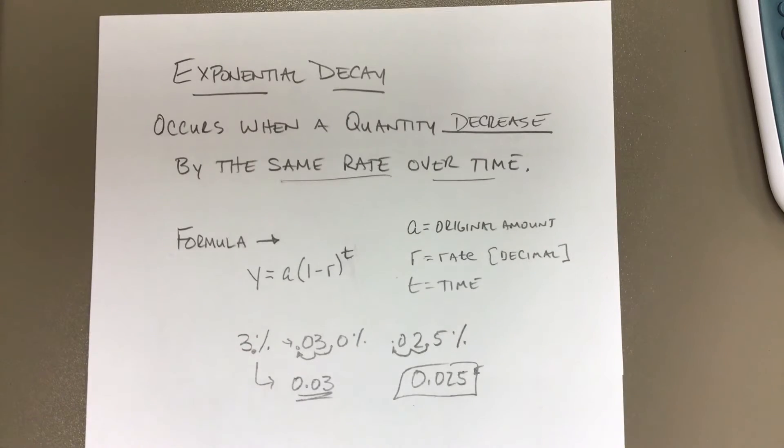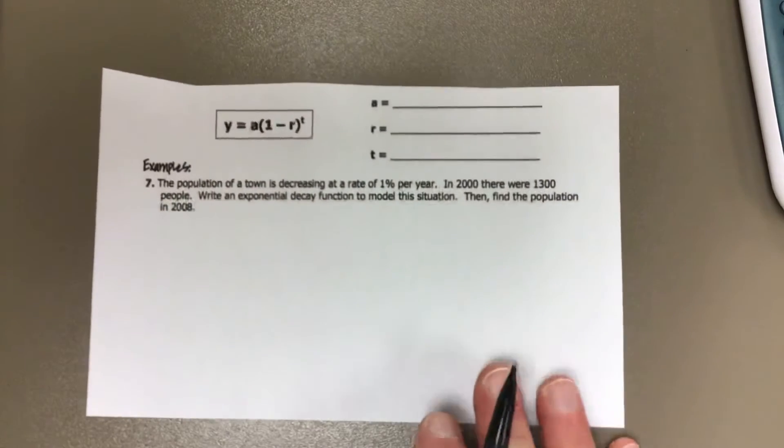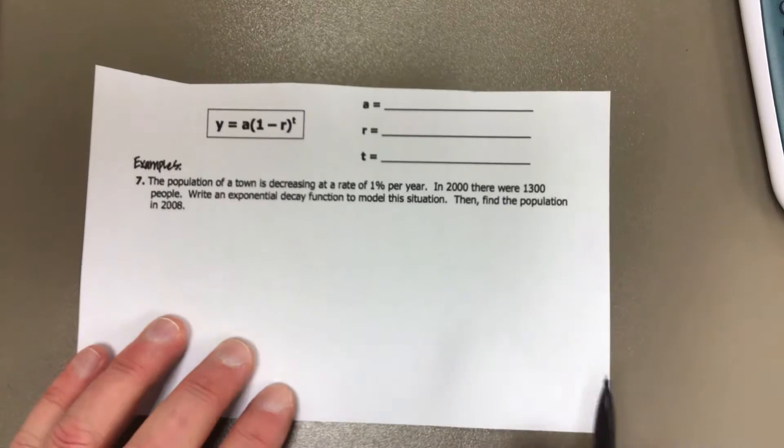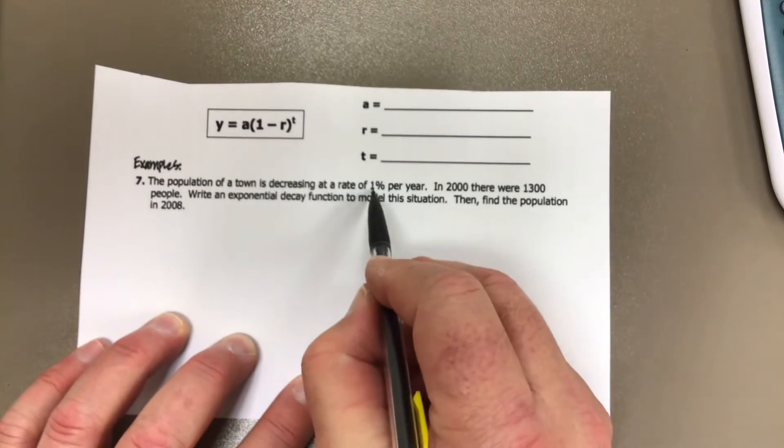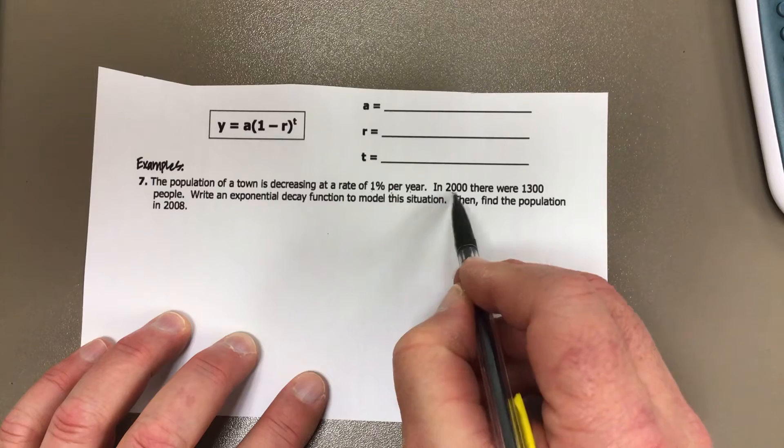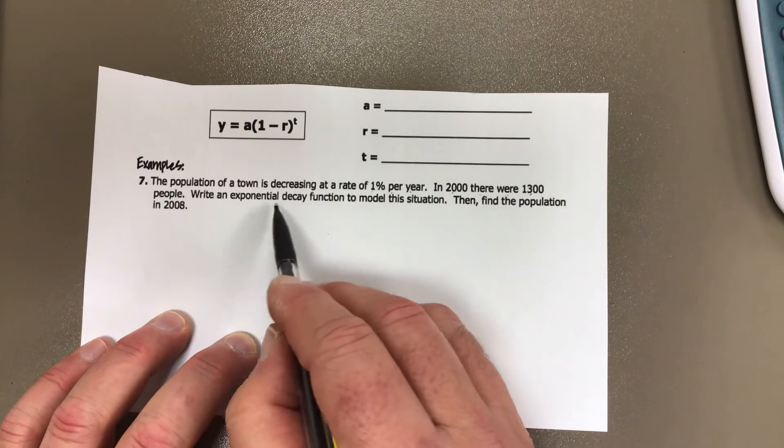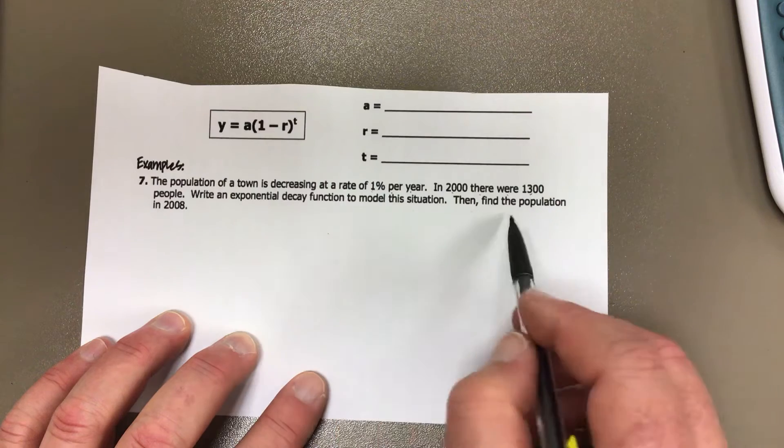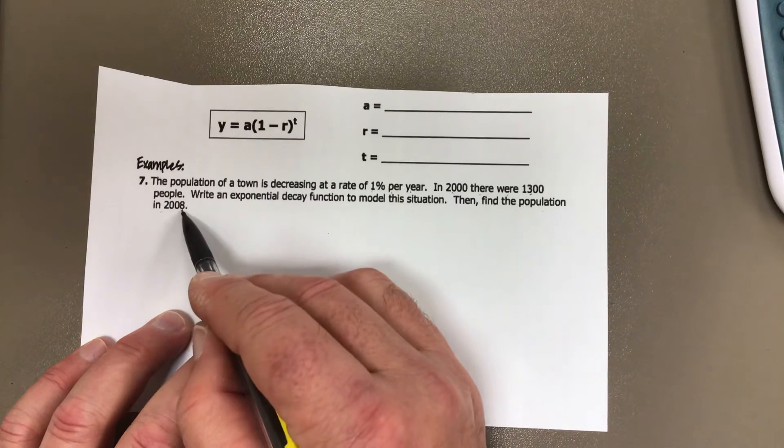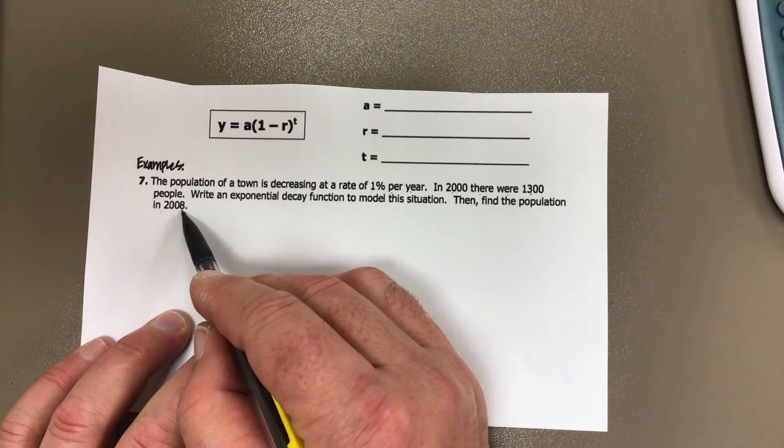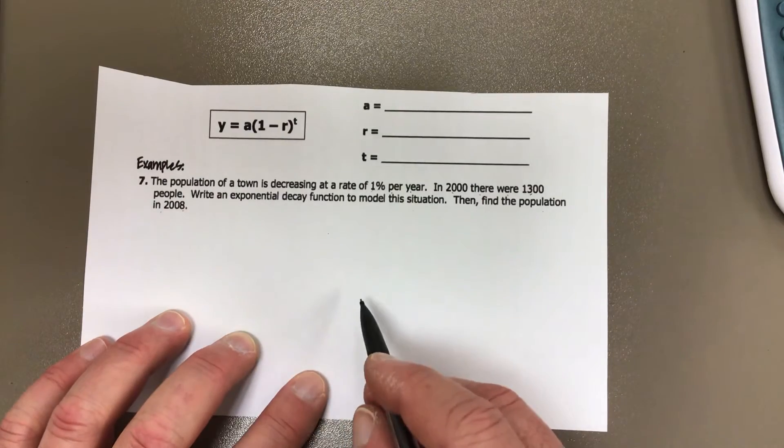Okay, so let's do a problem here. We say a population of a town is decreasing by the rate of 1% per year. In the year 2000, there were 1,300 people. We're going to need to write an exponential decay function to model the situation, then find the population in 2008.